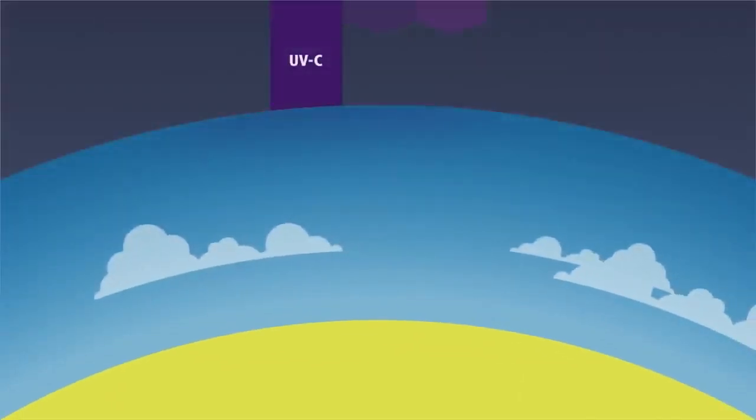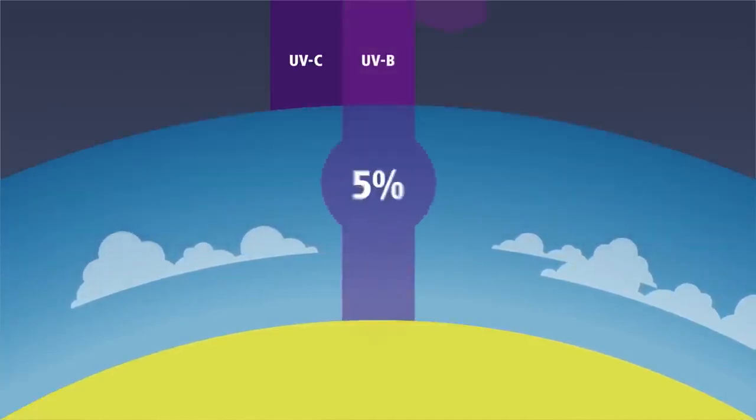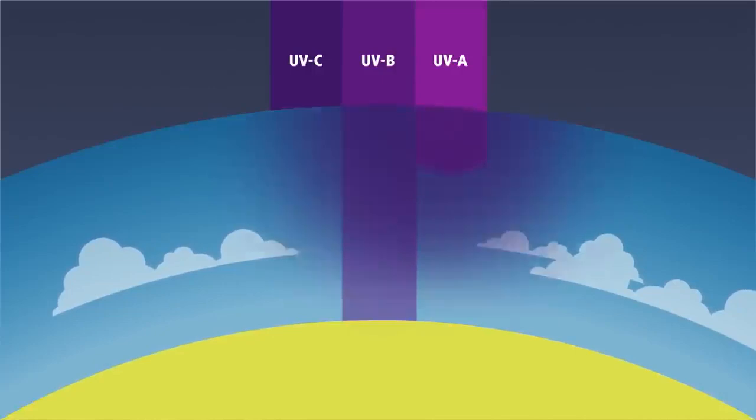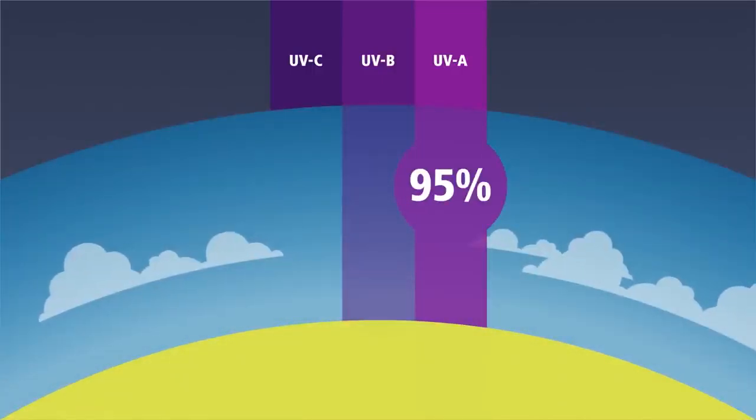UV-C radiation gets trapped in the ozone layer of the atmosphere. But 5% of UV-B radiation can pass through the atmosphere. And up to 95% of UV-A radiation can get through to us without any interruptions.